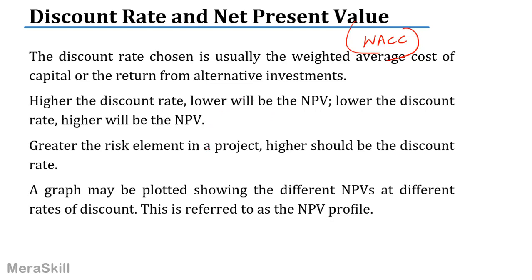Higher the discount rate, lower the NPV. Lower the discount rate, higher will be the net present value. Greater the risk element in a project, higher should be the discount rate. If I wanted 12% but it's a very risky project, I better set it at 15% — because it's a riskier project, I need higher returns in order to take the risk of venturing into it.